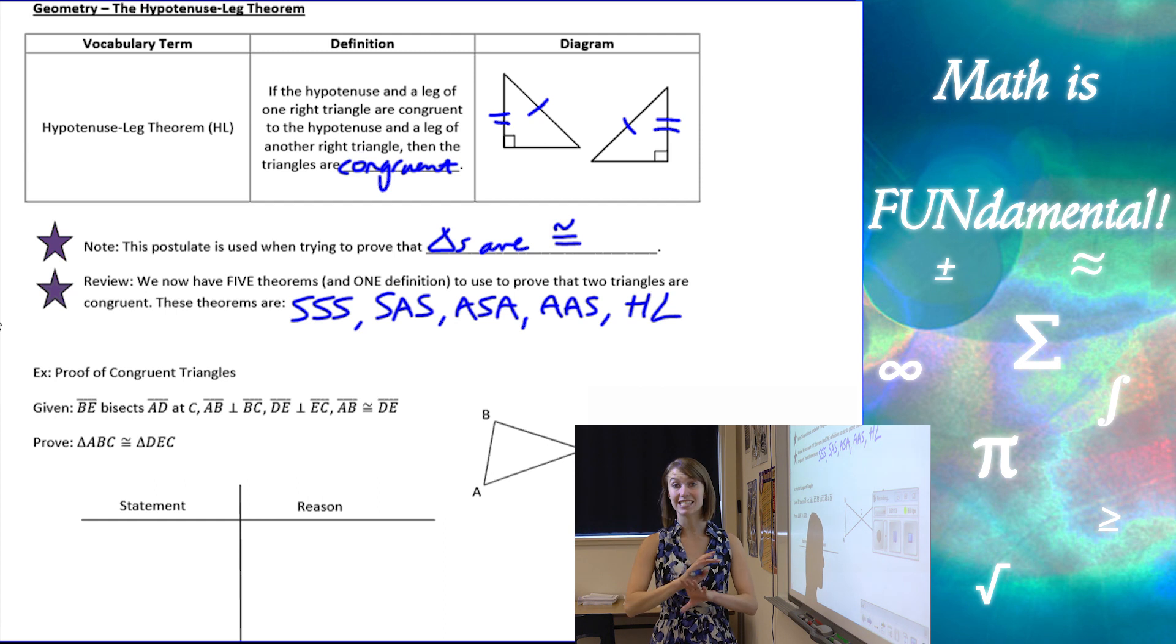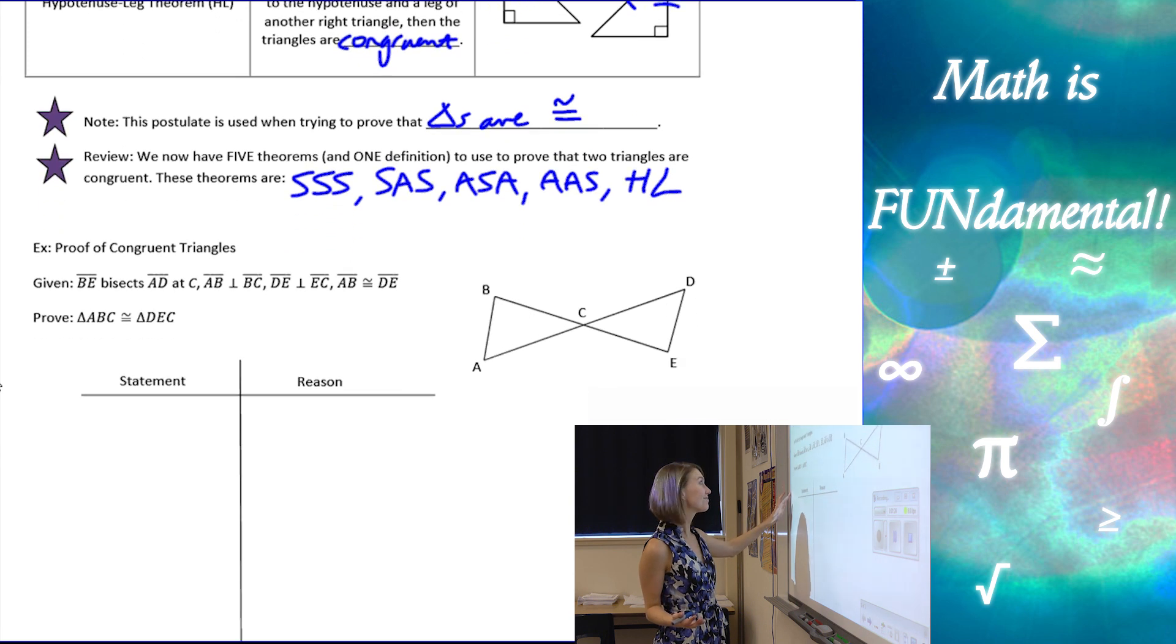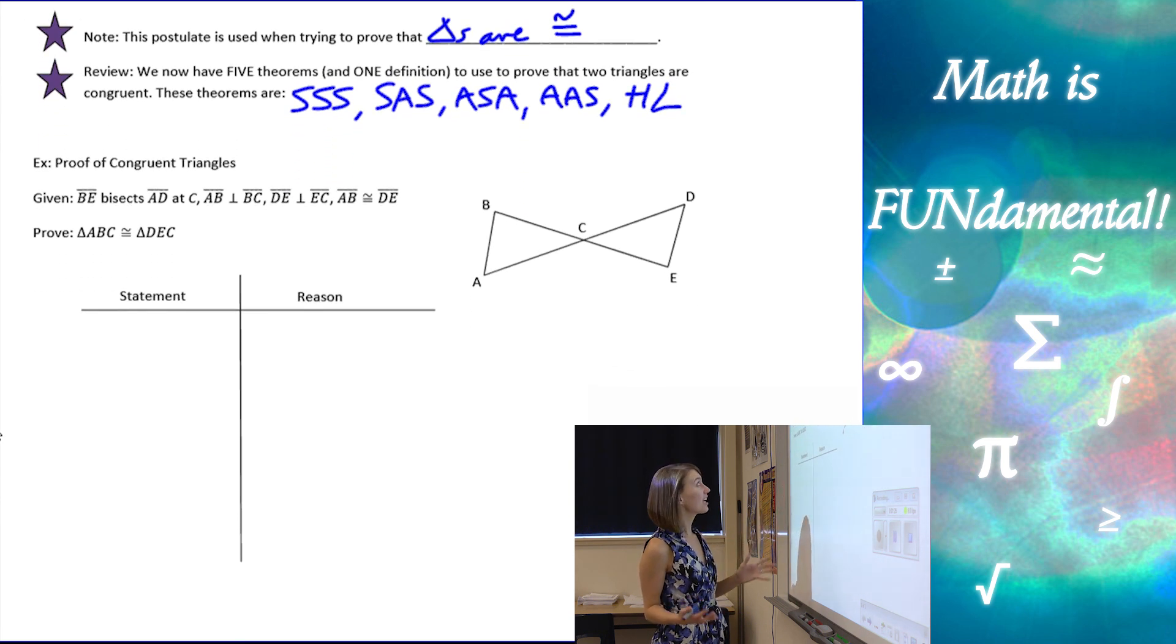We have five of these and that's it. We're not learning anymore for congruent triangles, just these five, and then of course the definition of congruent triangles, which is a little bit more work for us. Let's look at this example here.